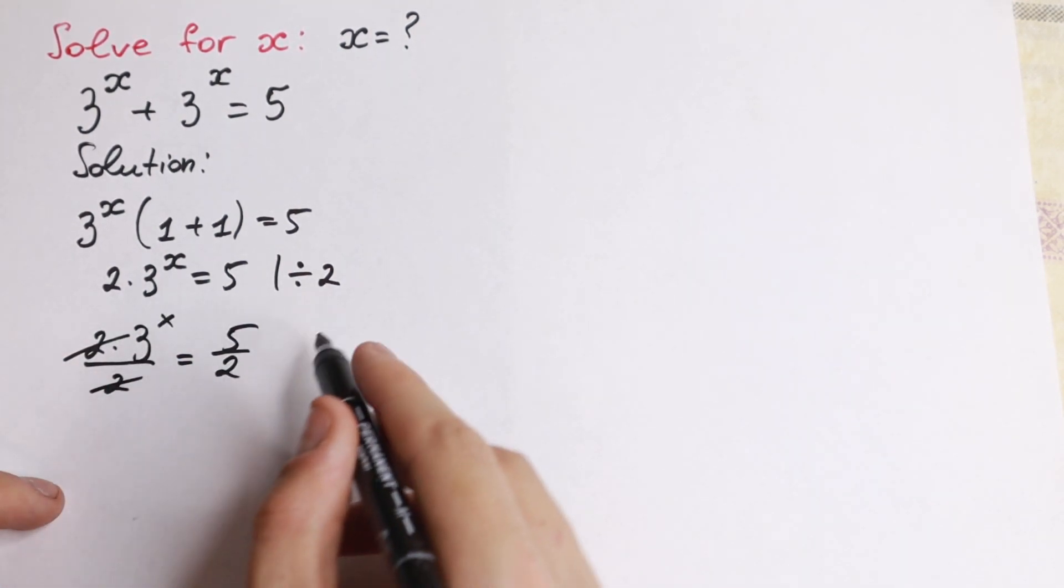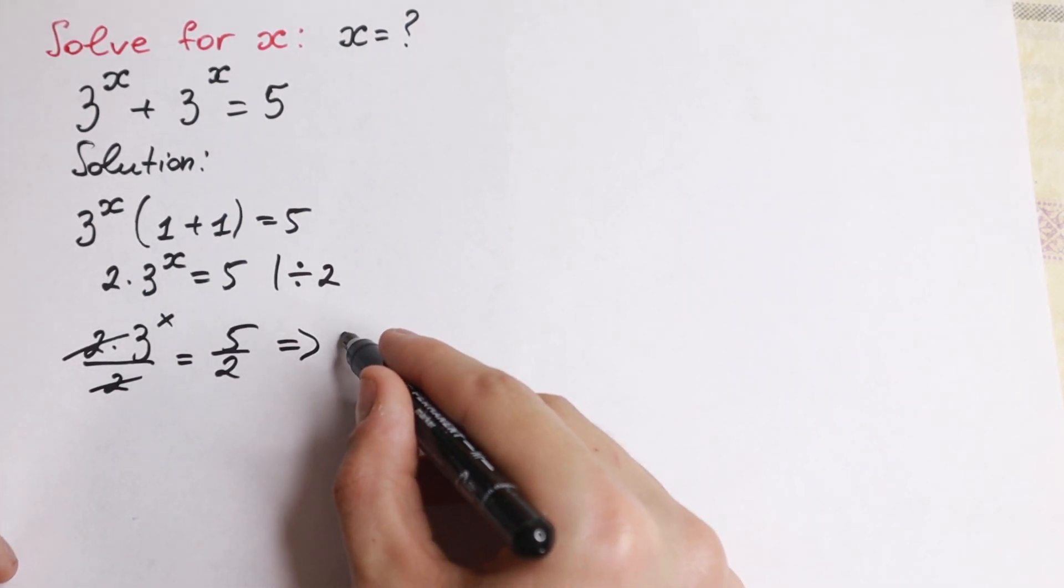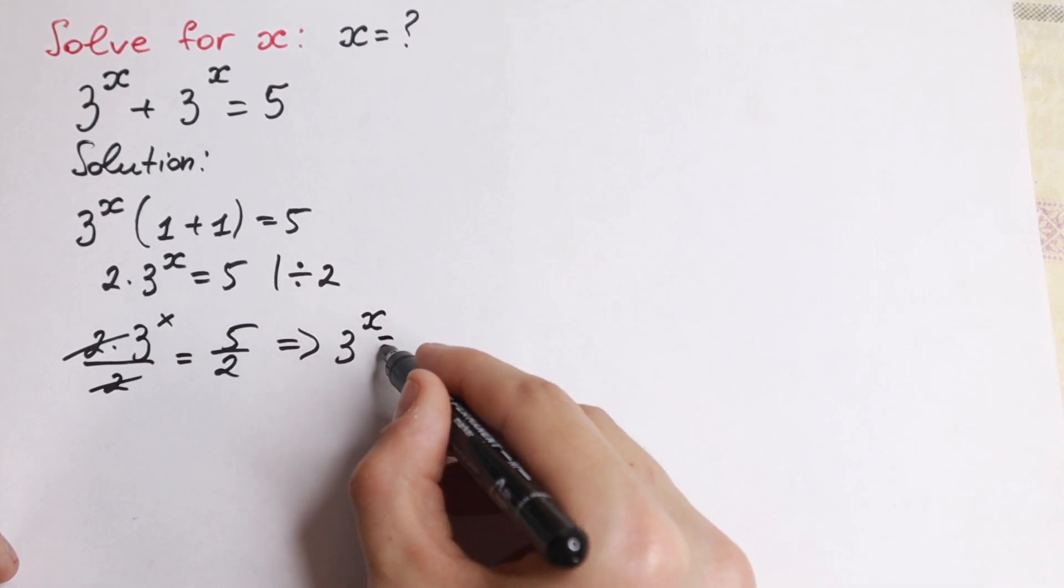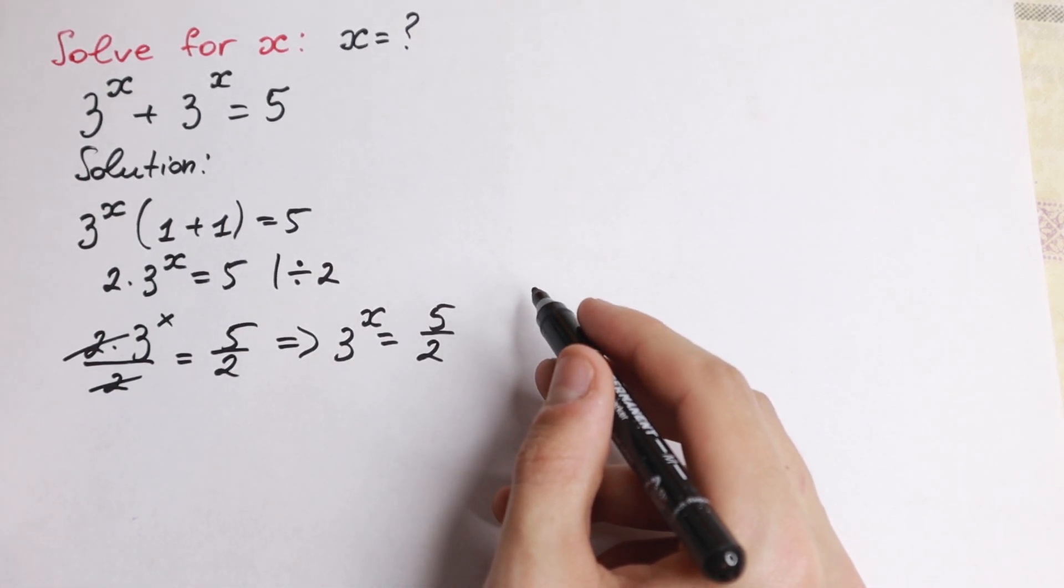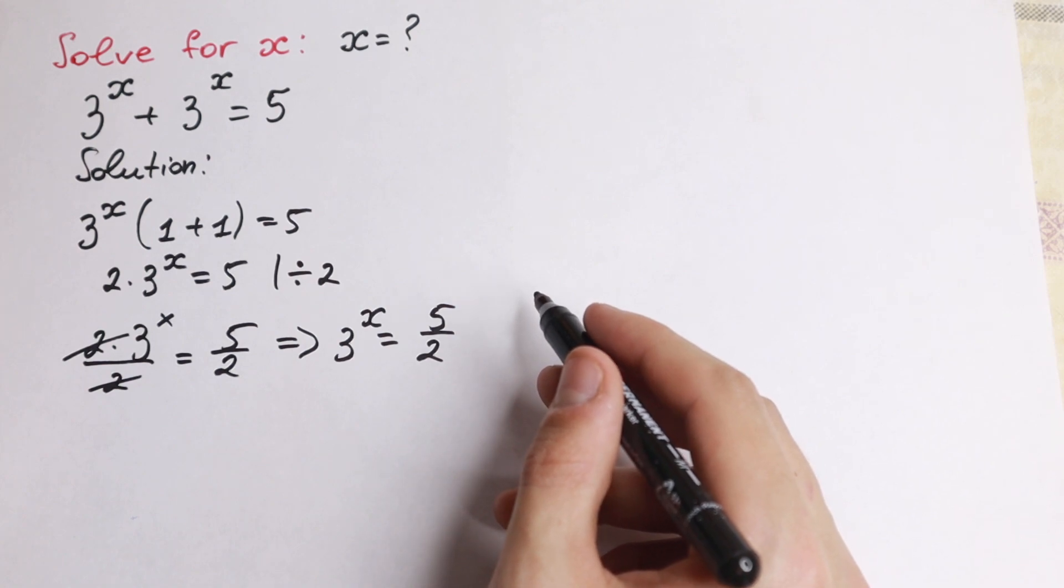Canceling this, we will have our really good classic equation: 3 to the x equal to 5 halves. And we need to solve it. How can you solve this?